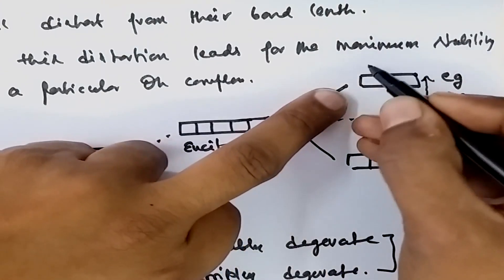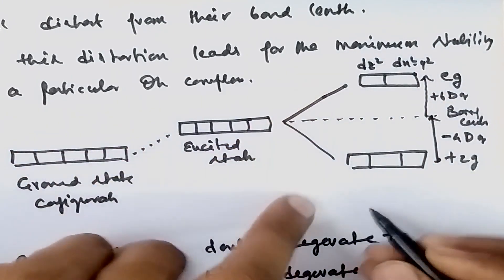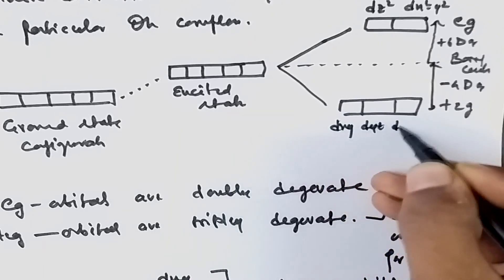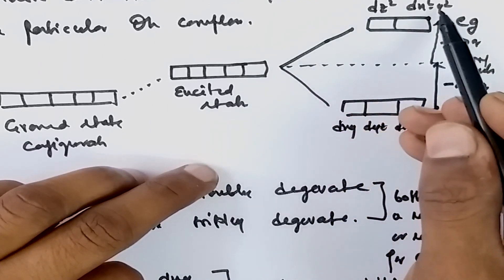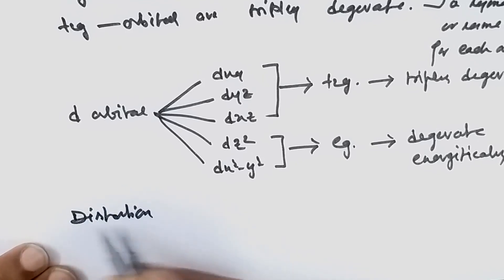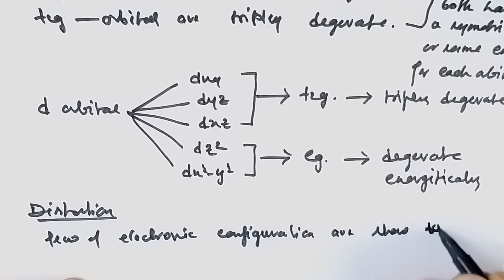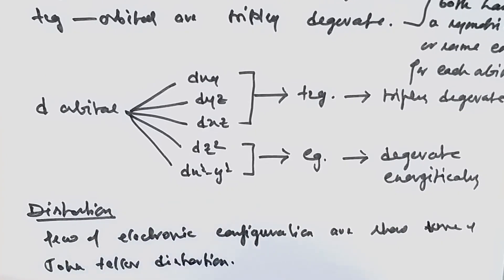The eg orbital consists of dz² and dx²-y², whereas the t2g orbital contains dxy, dyz, and dxz. These three t2g orbitals are energetically degenerate, while dz² and dx²-y² are also degenerate with each other. Considering which configurations show Jahn-Teller distortion, we must ask why only certain electronic configurations exhibit this distortion.